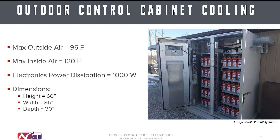The boundary conditions you see on the left are potential environmental requirements you might see from a customer, dictated by the components in your system and where the cabinet is being deployed. The max outside air temperature based on the climate is 95 degrees Fahrenheit. The max inside air temperature, mostly dictated by the survival temperatures of the electronics, is 120 degrees Fahrenheit. The waste heat or electronics power dissipation — found by summing all the data sheets from your components — is estimated at 1000 watts. The enclosure dimensions are 60 inches tall, 36 inches wide, and 30 inches deep.